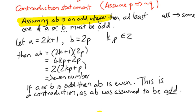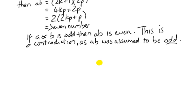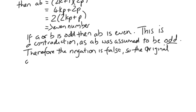In other words, we've tried to prove the opposite of the original conjecture and we've found that we can't, in which case the logic is that the original conjecture must be true. So we say here that this is a contradiction as AB was assumed to be odd. Therefore, the negation is false. So the original conjecture is true.